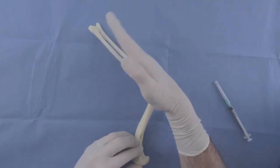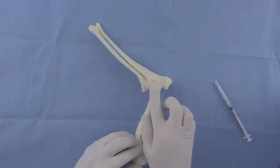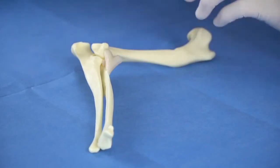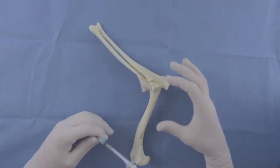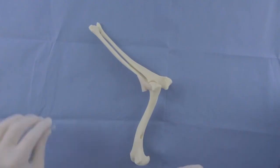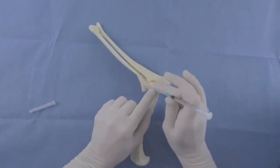Note the direction the humerus is pointing. The injection site is approximately halfway between these lines. The distance between the middle of the epicondyle and the joint space can be easily measured on a lateral radiograph.